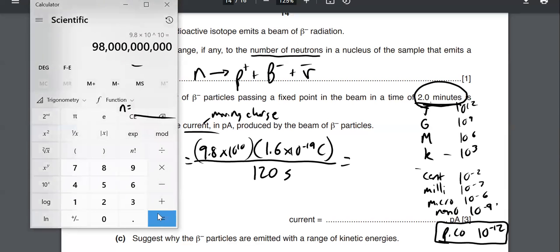So we got 9.8 by 10 to the 10 beta minus particles. Each one has a charge of 1.6 times 10 to the negative 19 coulombs. So the total charge is going to be that. Spread out over 120 seconds gives us current of 1.31 times 10 to the negative 10.